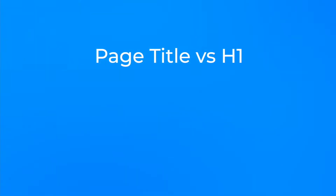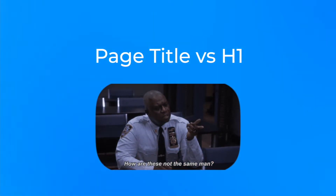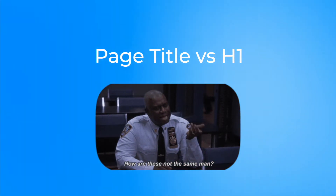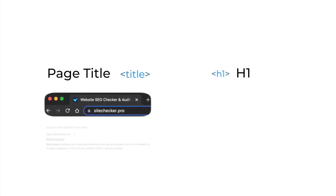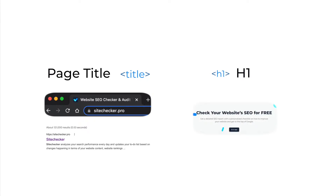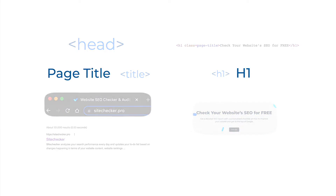Sometimes it's easy to mix up H1 header and the page title. However, they are not quite the same. The main difference between a page title and an H1 tag is that the page title is shown in the browser window and search results, while the H1 tag is only shown on the page itself. The page title is defined in the HTML head section, while the H1 tag is part of the body of a page.